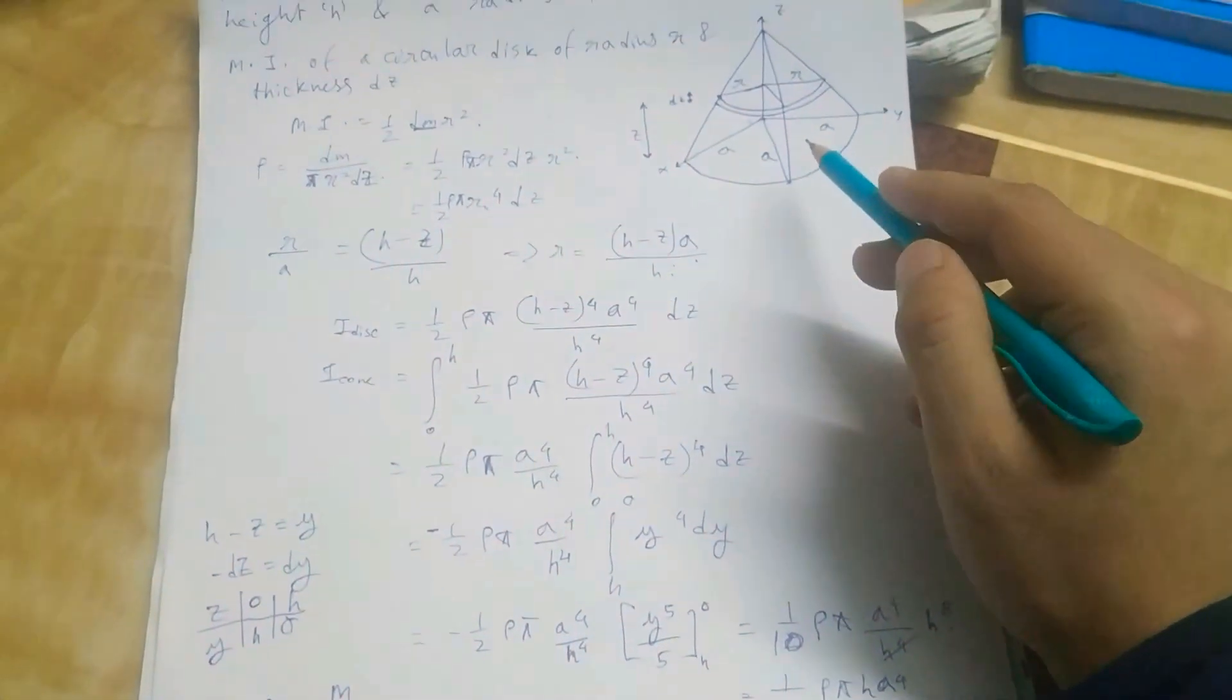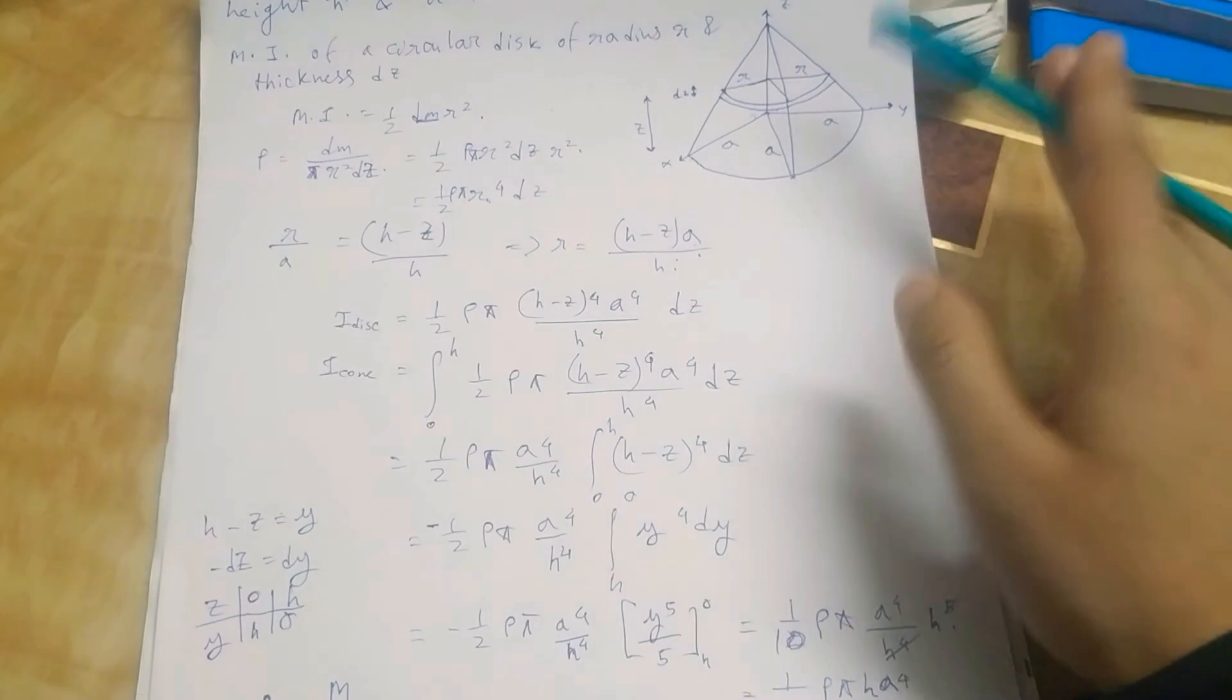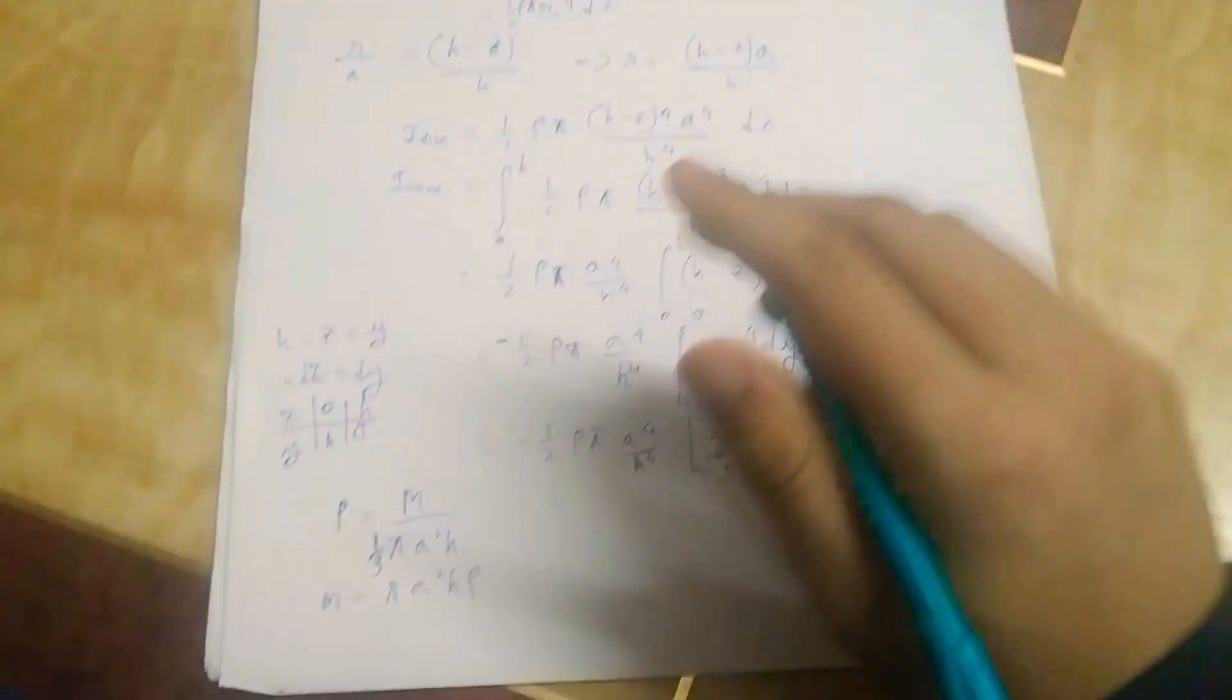The total volume will be one-third pi a squared h as this is a cone. If this was a cylinder, that will be pi a squared h. For a cone it will be one-third.